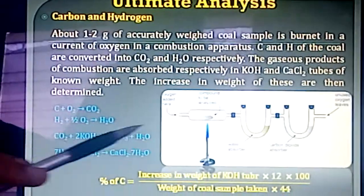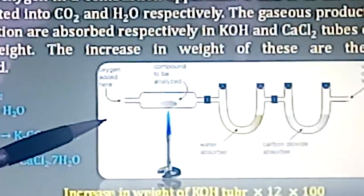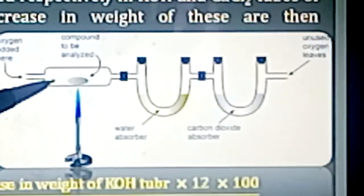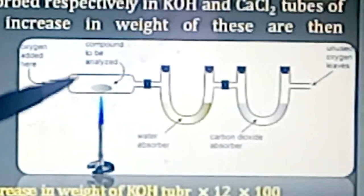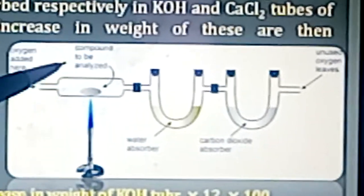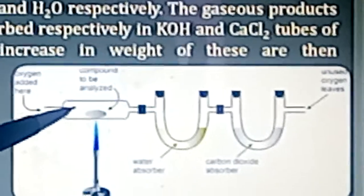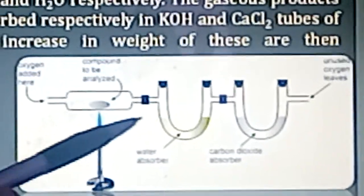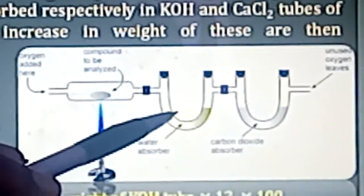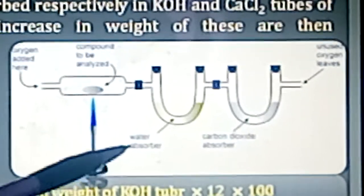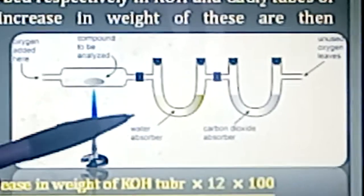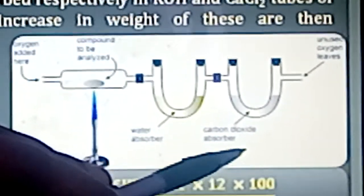This is the diagram of the experimental setup — the combustion diagram. Here, pure and dry oxygen is passed in. There is a copper oxide compartment, and we place the substance there. This combustion apparatus is connected with two different U-tubes. The first U-tube contains the anhydrous absorber — it may contain CaCl₂ — and the second contains KOH solution.